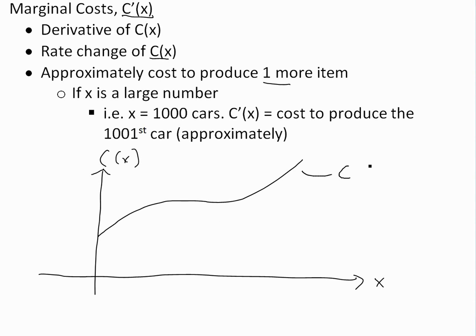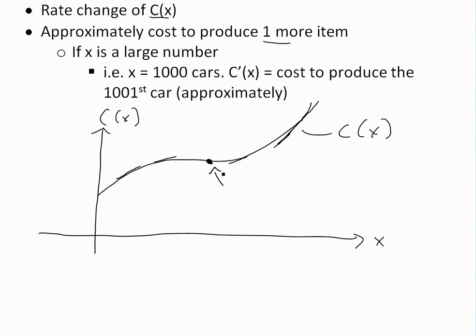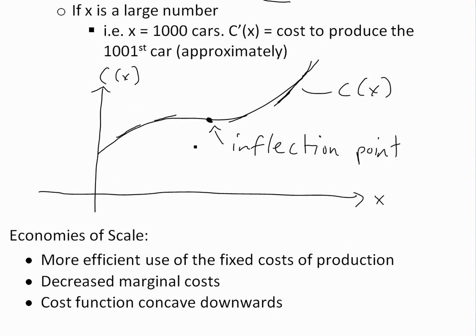This is a typical cost function. As you're producing more items initially, the marginal cost — which is the derivative, or just the tangent line to it — keeps decreasing. As you're increasing output, the marginal cost is decreasing until you get to an inflection point, and then the slope starts to increase higher and higher. That inflection point is where the slope of the cost function, or the marginal cost, begins to increase.